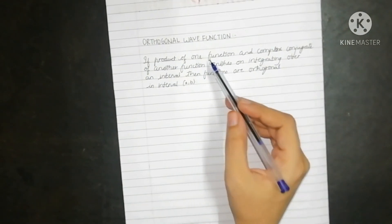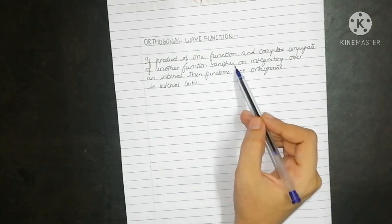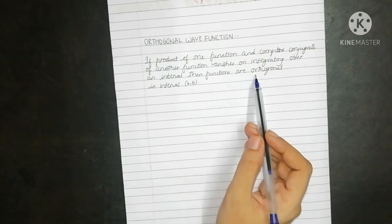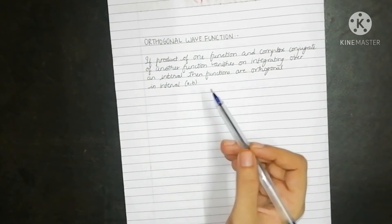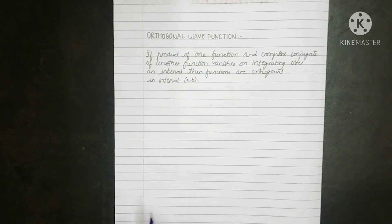As you can read, if the product of one function and complex conjugate of another function vanishes on integrating over an interval, then functions are orthogonal in interval a to b. This can be represented as follows.